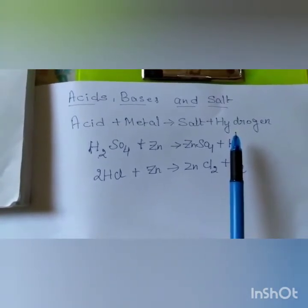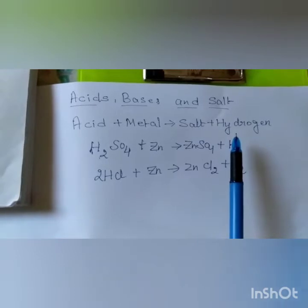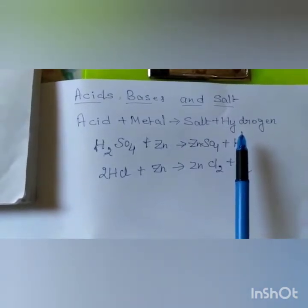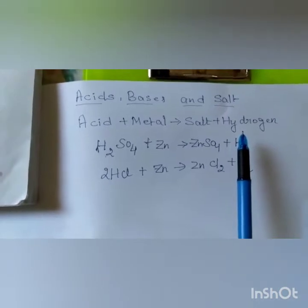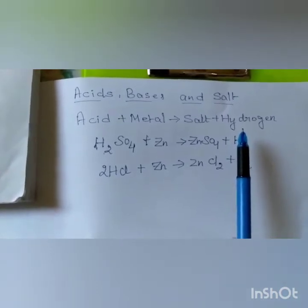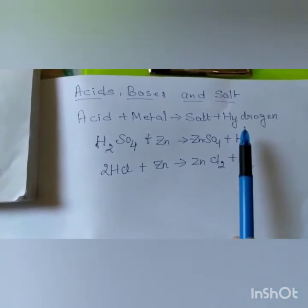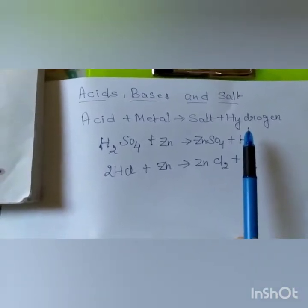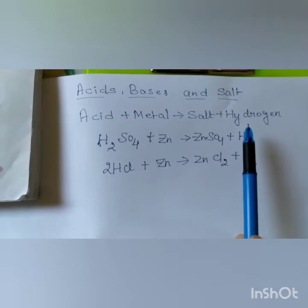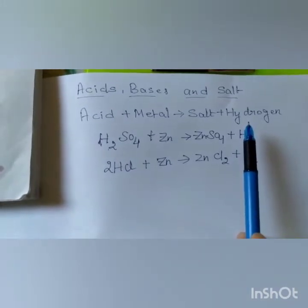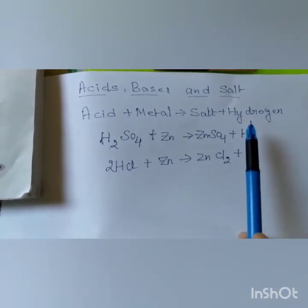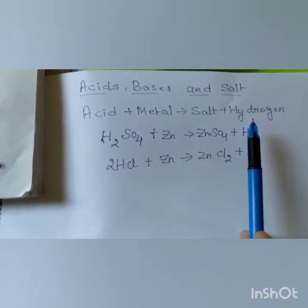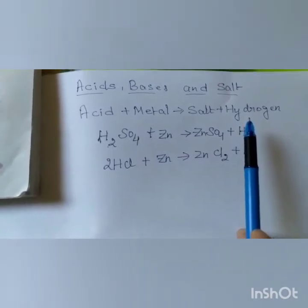In the test tube, take 5 ml of sulfuric acid and add zinc granules — solid pieces of zinc. You will see that a gas is evolved, and when that gas is passed through soap solution, bubbles are formed. On bringing a lighted candle near the bubbles, the hydrogen gas burns with a pop sound.